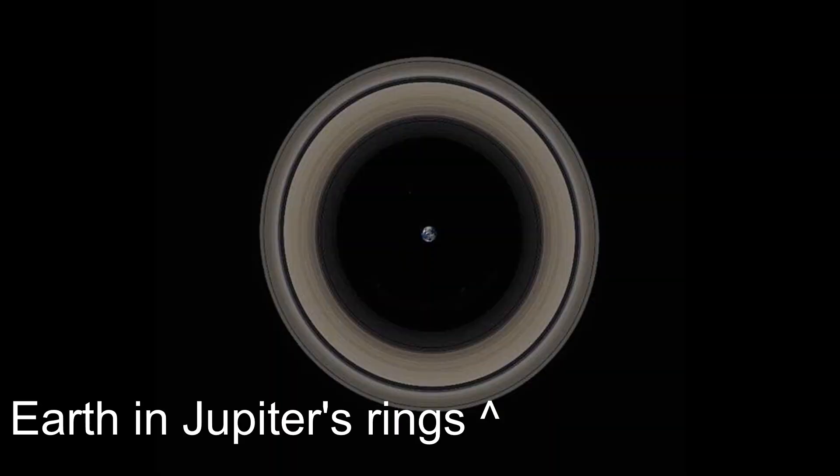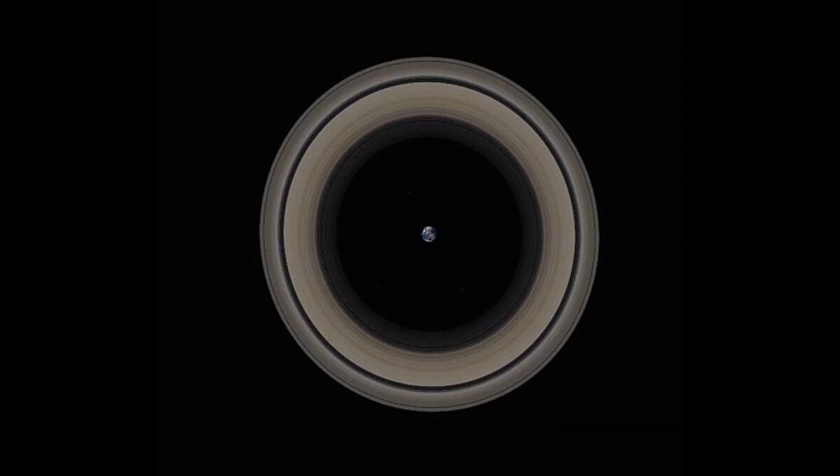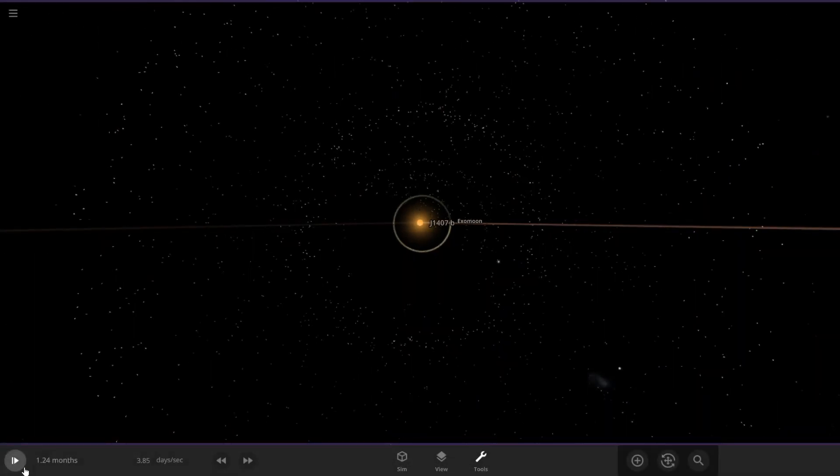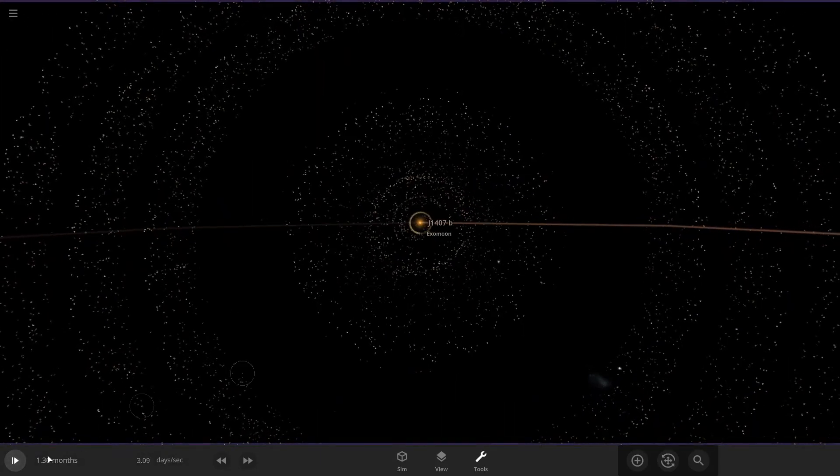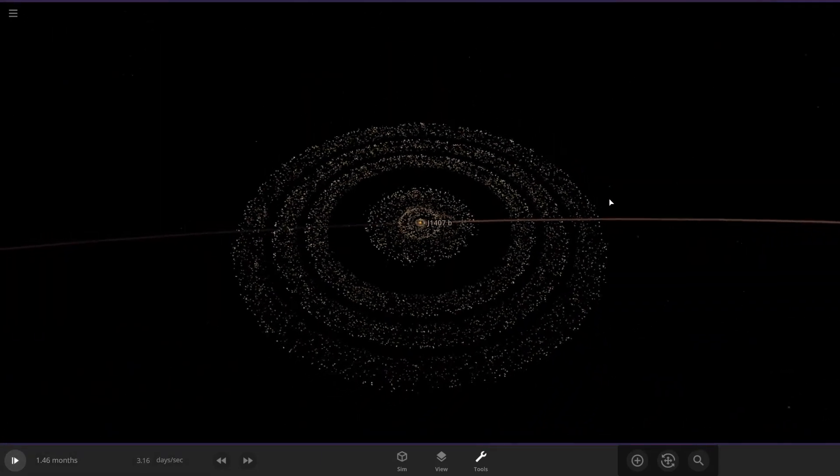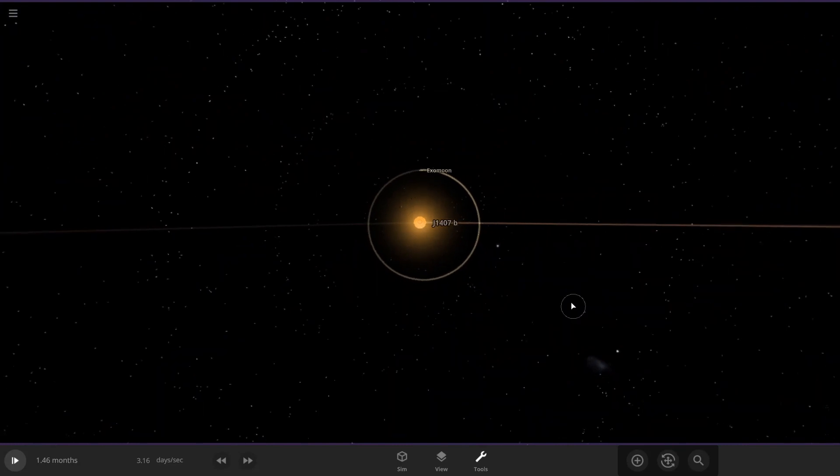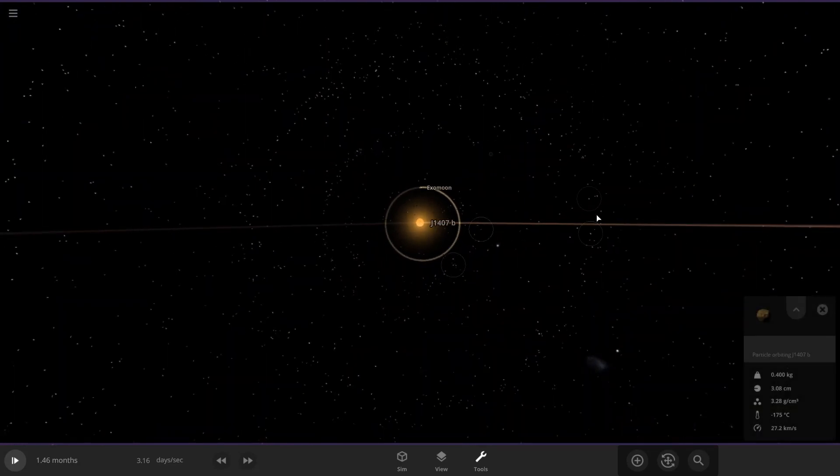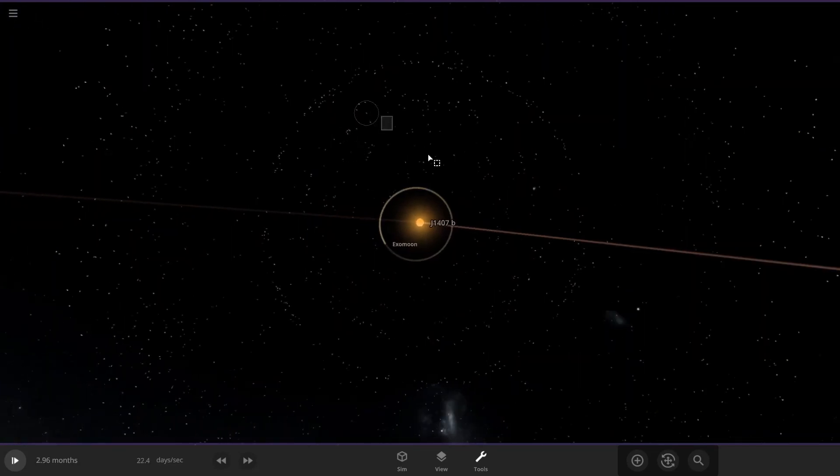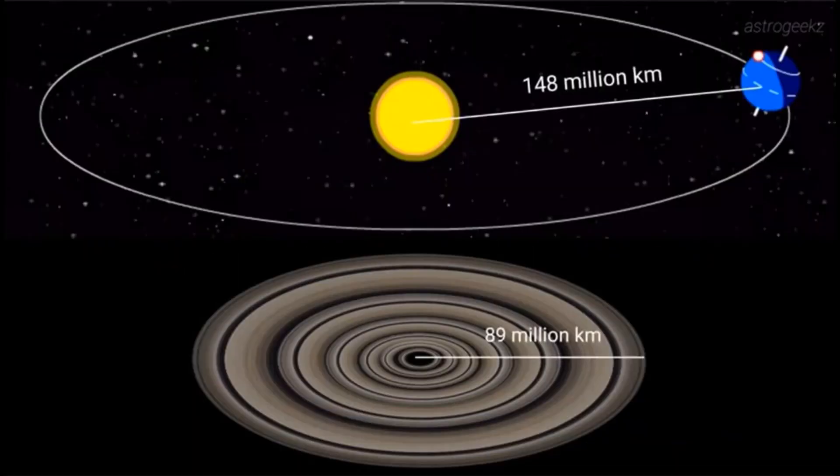Saturn's rings have a diameter of 270,000 kilometers, yet their thickness does not exceed 100 meters. Their total mass is only about 0.41 times the mass of Saturn's moon Mimas. In comparison, J1407b is approximated to be 200 times larger in ring diameter than this.